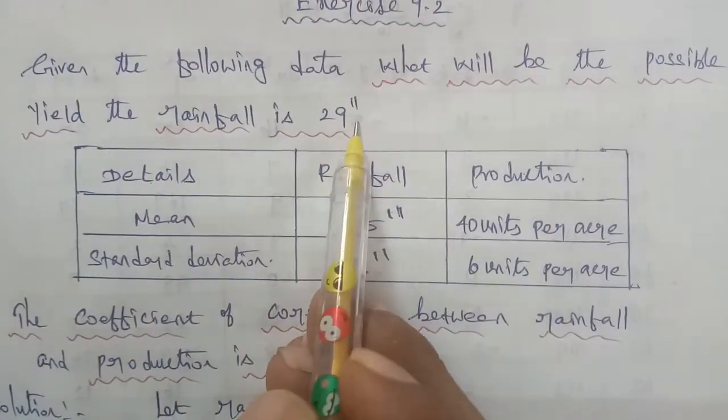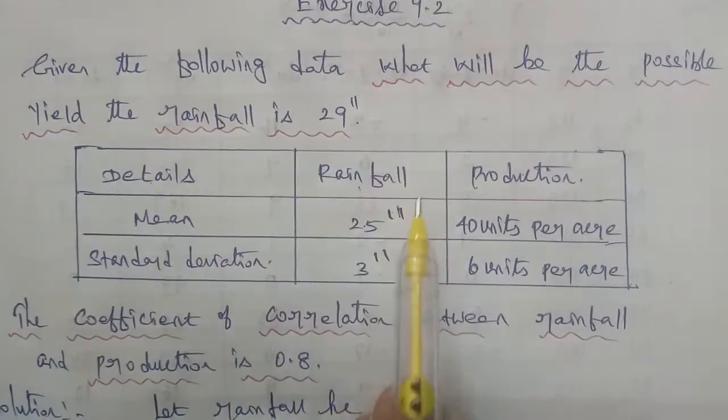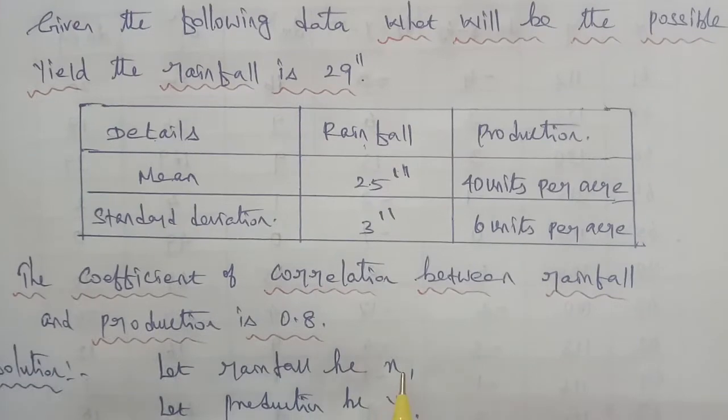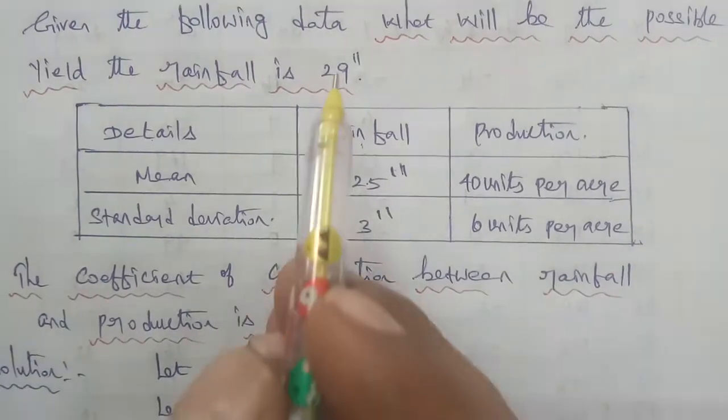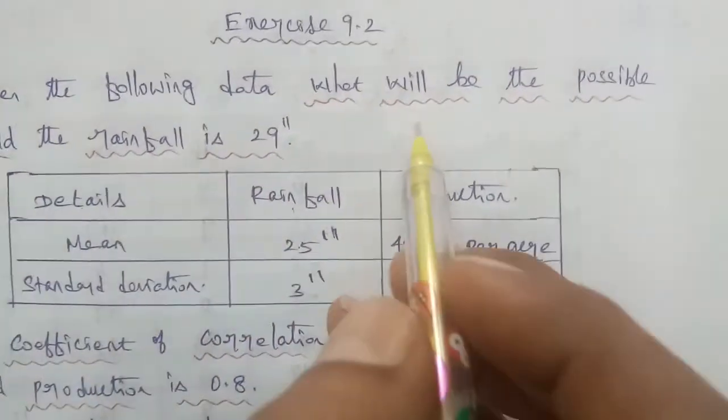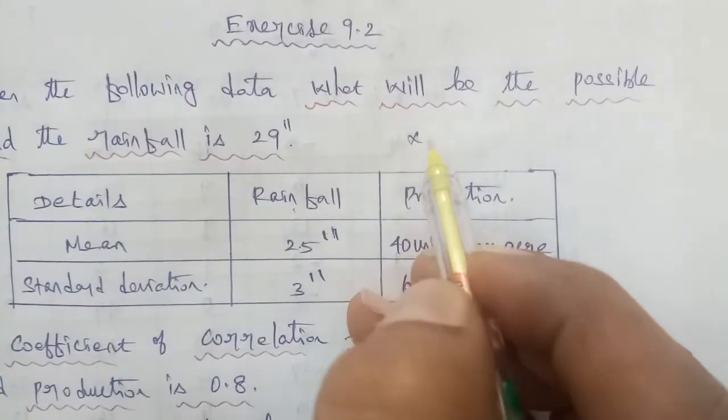The rainfall data x is given as 29. So x data is 29.